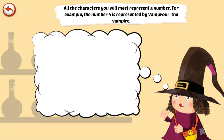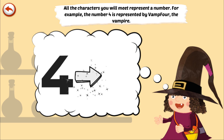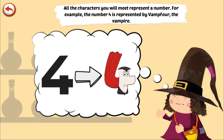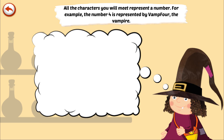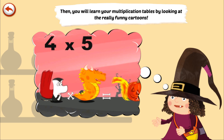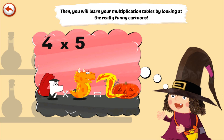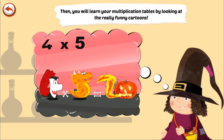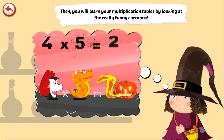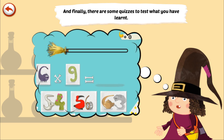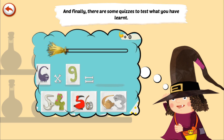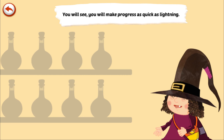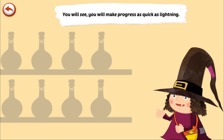All the characters you will meet represent a number. For example, the number 4 is represented by Vamp4 the vampire. You will learn your multiplication tables by looking at really funny cartoons. And finally, there are some quizzes to test what you have learnt. You will see, you will make progress as quick as lightning.